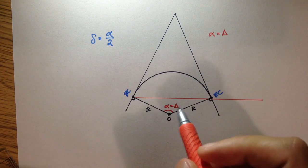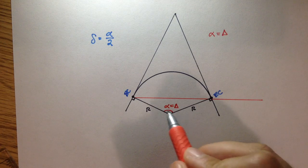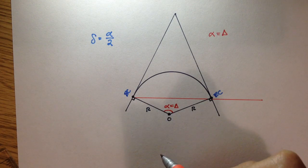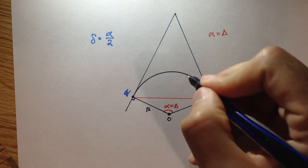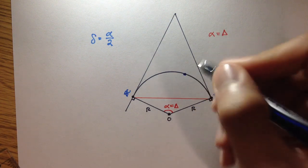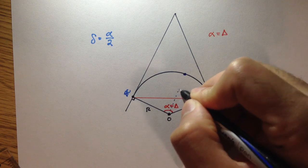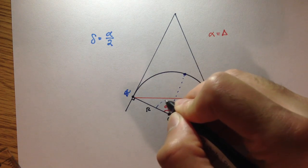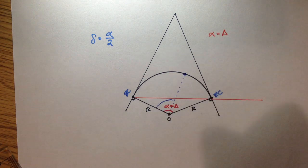Because big delta is the interior angle here. So let's say if you had a point right here, if you drew a line here, then that would be delta, right? That would be delta.